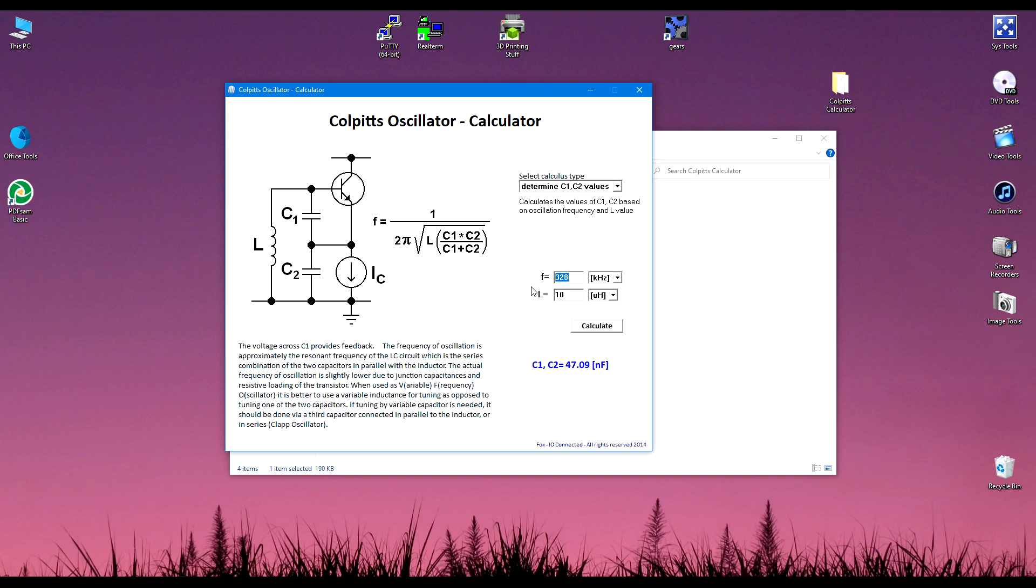If they're 20% tolerance, 20% from 47 nF is more than 9, 9.5 nF. That means they could be as low as 38 nF and as high as 56, somewhere between 38 nF. Let's see what happens if I use two 38 nF capacitors and my inductor remains 10 µH. I will get 365 kHz, and this is almost 40 kHz more than what I tried to achieve.